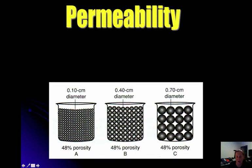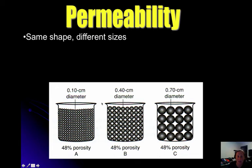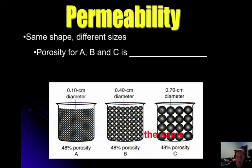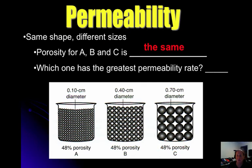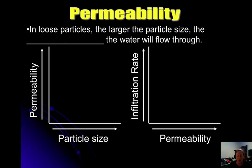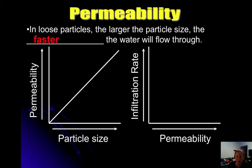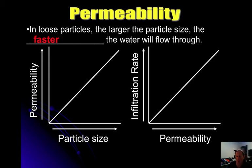Looking at three containers with the same shape but different particle sizes: while the porosity is the same, the greatest permeability would be for the largest particles. In loose particles, the larger the particle size, the faster water flows through. So as particle size increases, permeability increases — water is able to pass through those particles more easily. With permeability, the higher the permeability, the faster the infiltration rate. It's a direct relationship.